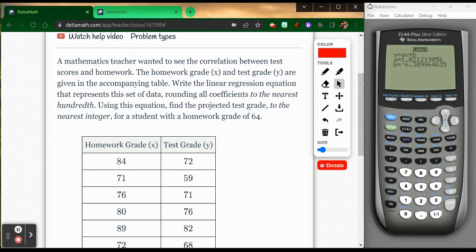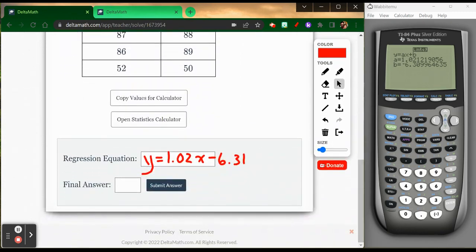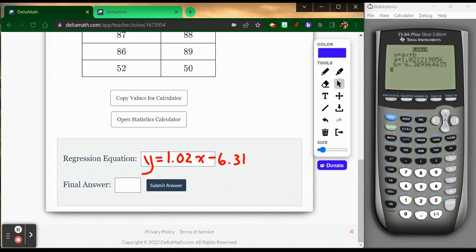So in my list, homework was my X values. Test grades were my Y values. So they gave me a homework grade. They said, what about somebody who has a homework grade of 64? What would their test grade be? What would we project that their test grade would be? What I'm going to do now is I'm going to take that 64. I'm going to take that 64 and I'm going to plug it right in for X. I'm going to substitute it in for X and evaluate that answer.